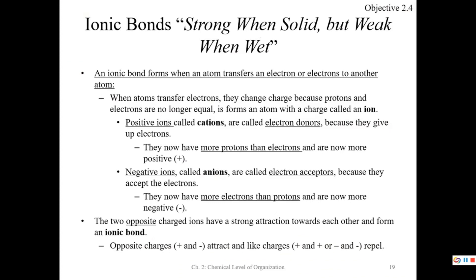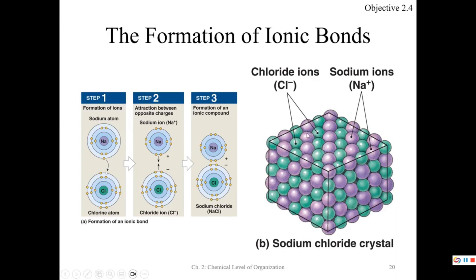When you have these oppositely charged ions, there is a very strong attraction called an ionic bond. They come together and form a very strong ionic bond. An ionic bond forms when oppositely charged ions come together. Opposite charges attract; like charges repel in chemistry. So Cl- and Na+ will form a bond — this is always going to be a compound because you have two different elements of different electronegativities.